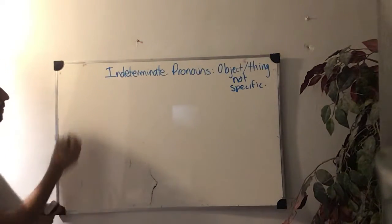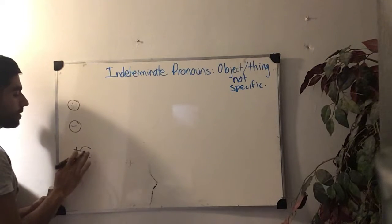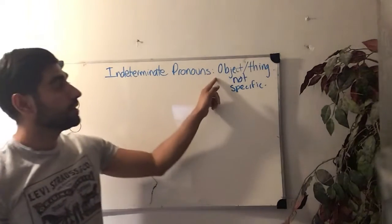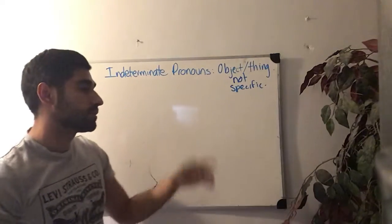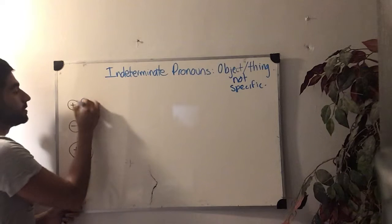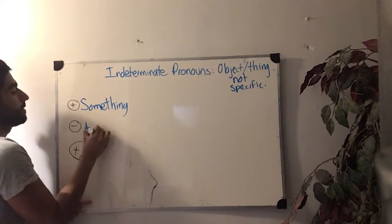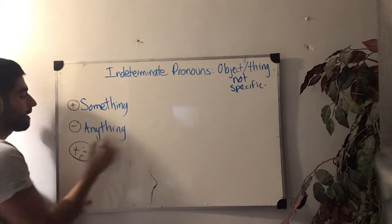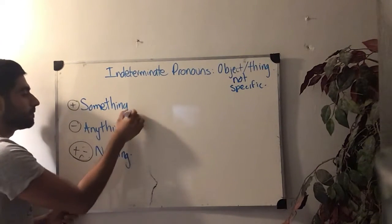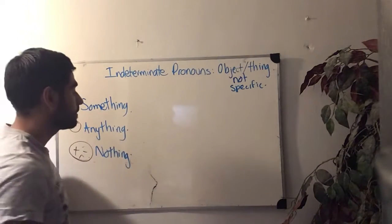So let's start first of all with the words that we have to learn. In this case we have three words in total. Remember, we are referring to an object or to a thing that is not specific. So, something really easy — we have the word something, we have the word anything, and we have the word nothing. It's basically the same rules, but in this case we are referring to an object or to a thing that is not specific.